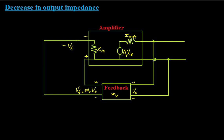To analyze the output impedance, we connect a voltage source of voltage V0 at the output terminal. The circuit draws a current I_out from this source. So instead of getting an output voltage V0, we assume we are connecting a voltage source V0 to the output terminal, which gives a current I_out to the amplifier. Applying Kirchhoff's voltage law to this output loop, we can write the equation.